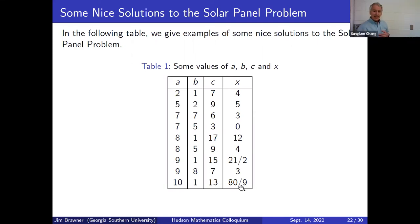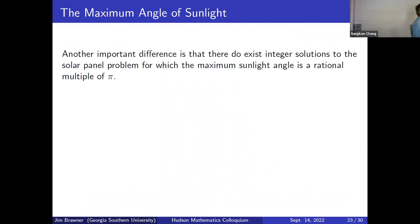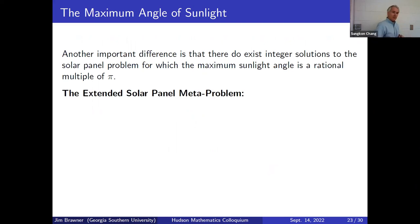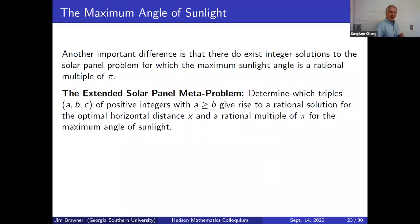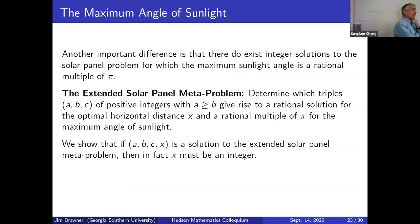This leads to what I call the extended solar panel meta-problem: which triples A, B, C of positive integers (with A ≥ B) give rise to both a rational optimal distance x and a maximum sunlight angle that is a rational multiple of π? It turns out that yes, we can find all such solutions and give a complete parameterization.